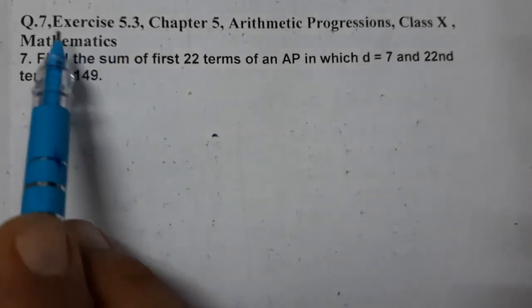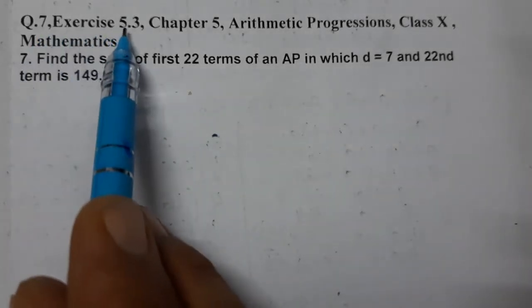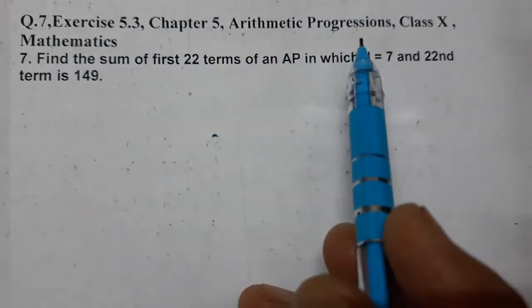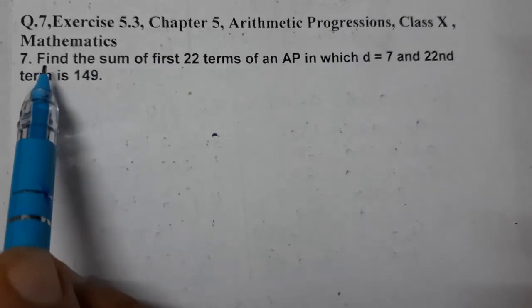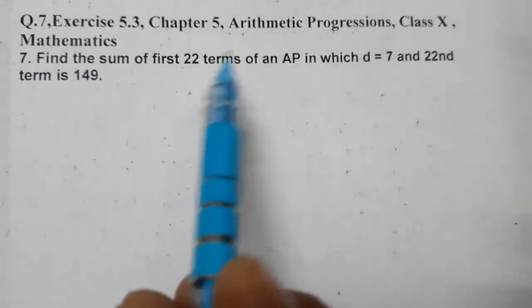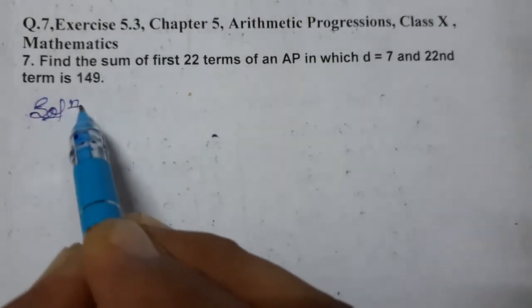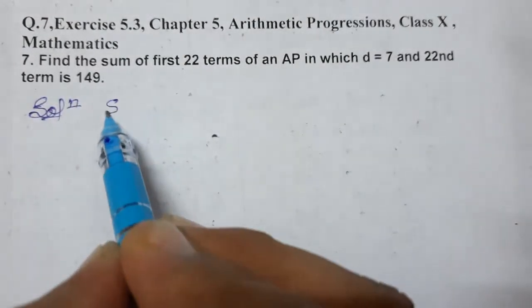Hello students, let's do question number 7 of Exercise 5.3, Chapter 5, Arithmetic Progressions, Class 10 Mathematics. Find the sum of first 22 terms of an AP. We need to find S₂₂.